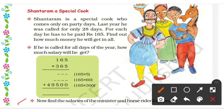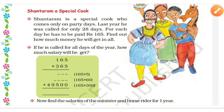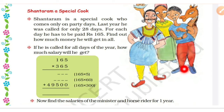Now find the salary of the minister and horse rider for one year. One year ki salary nikalni hai minister ki aur horse rider ki. Minister ki 195 rupees per day aur horse rider ki 76 rupees per day given hai. Minister ki salary: 195 × 365 and horse rider ki salary: 76 × 365 se multiply karenge to one year ki salary aayegi.